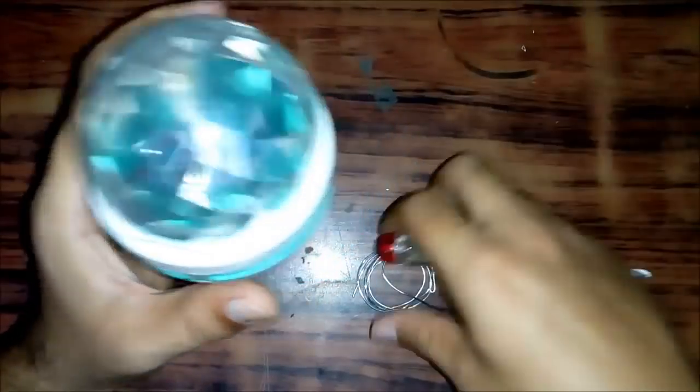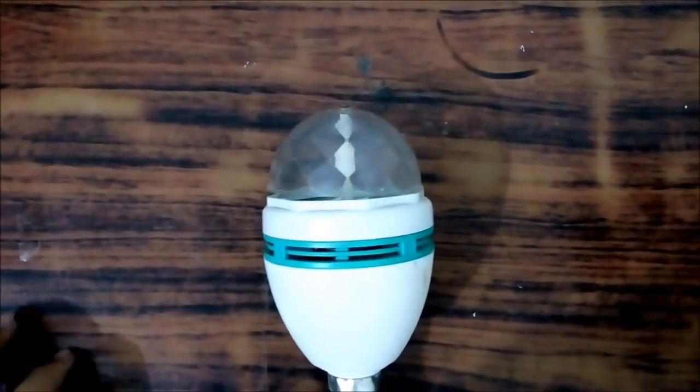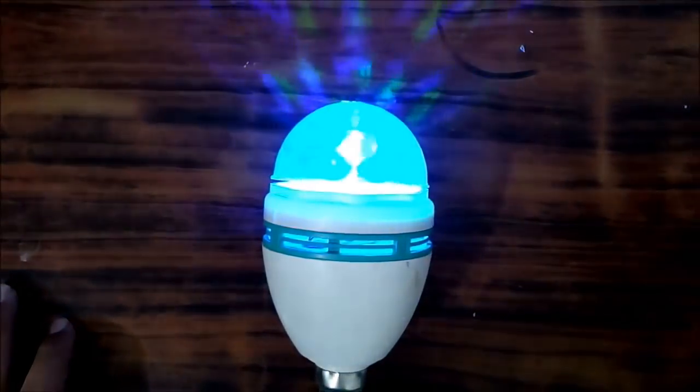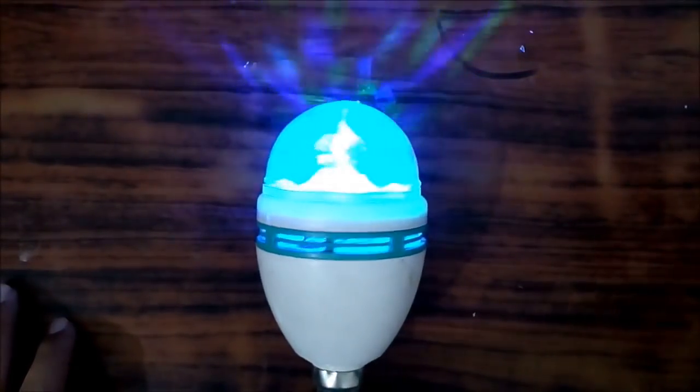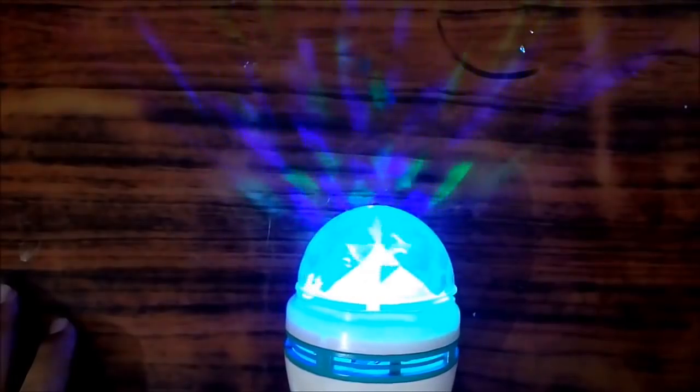So let's test it. So friends let me show you whether it is working or not. Let me turn it on. So you can see it is working perfectly. So in this manner you can repair your previous or last year's disco light.